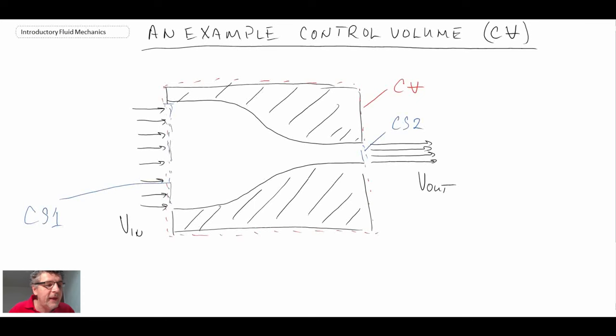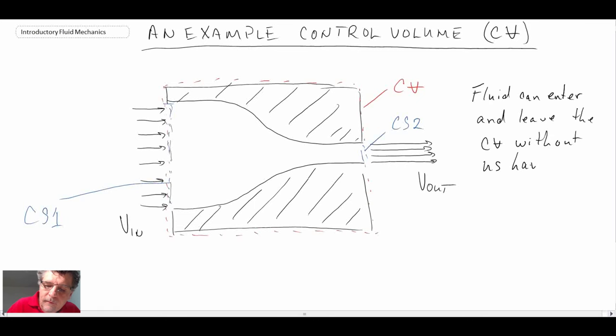So with a control volume, fluid can cross the boundaries, but our governing equations are for fixed chunks of mass. And consequently, we need a way to be able to relate that. So the idea with the control volume is that you only are worried about the boundaries, the inlets and the exits, and we don't have to keep track of all of the particles of fluid going through it.